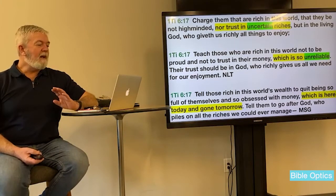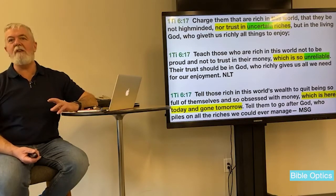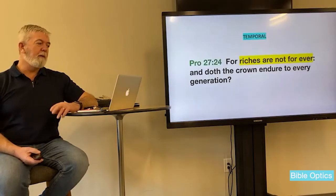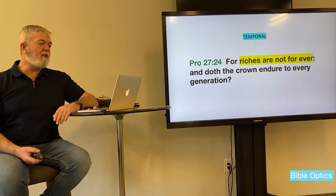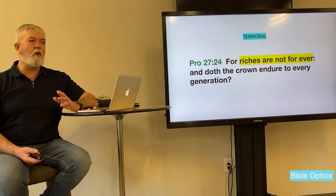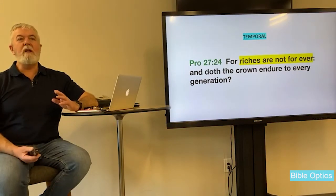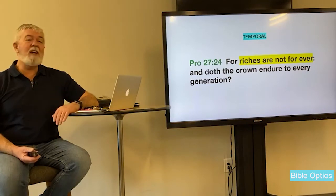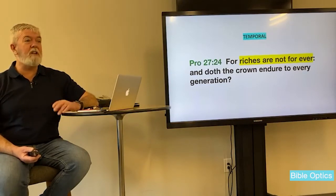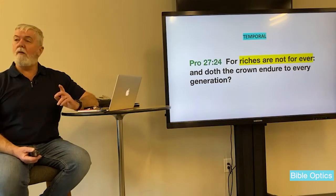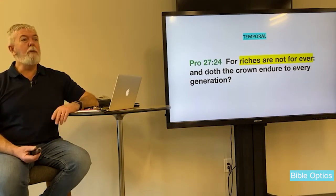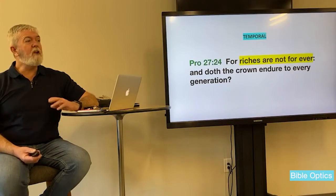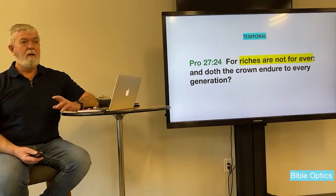Uncertain, unreliable, here today gone tomorrow — it wants to master you, enslave you, and have you worship it. Proverbs 27:24 says riches are not forever, and you can't pass the crown to the next generation and think for sure that's how it's going to be. You can't guarantee your riches today will be adequate tomorrow. It's unstable and uncertain.